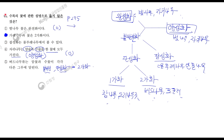이것은 양성화, 불안전화, 완전화, 단성화, 잡성화에 대한 개념을 알고 가셔야 풀 수 있는 문제라고 할 수 있겠습니다.